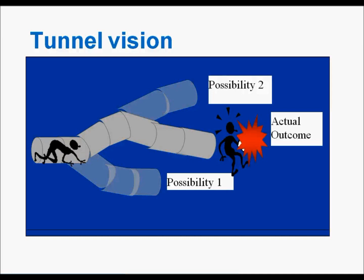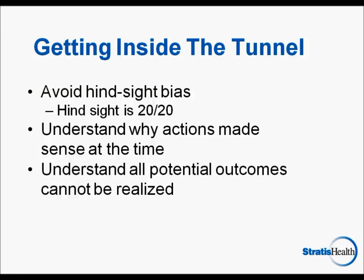You can only make the best decision possible at each step along the way. When we are outside the tunnel, we cannot judge based on the outcome. We need to decide why decisions were made along the way and how to make different choices in the future. Instead of looking at an unintended outcome from outside the tunnel, we need to try to get inside the tunnel. By doing this, we avoid hindsight bias and understand why actions made sense at the time. The quality of decisions is not determined by the outcome, but by the use of the information available at the time. Getting inside the tunnel helps us realize that information for decision making does not come all at once, and each new piece of information and the order in which it arrives can alter the path we take.